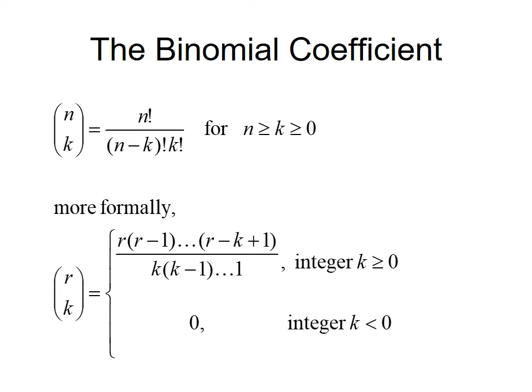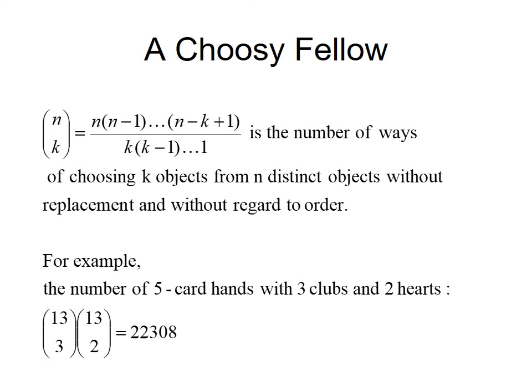The binomial coefficient is the same as the permutation formula except you also divide by k factorial. This is how we do combinations — choosing k objects from n distinct objects without replacement, where you don't care about order. So it's a step beyond permutation: you're also dividing by k factorial.